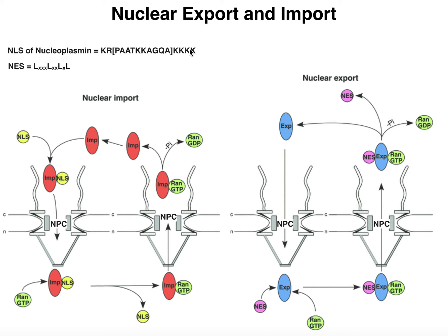Lysine is a basic amino acid that is positively charged at physiological pH. You can also find arginines in the NLS, but they're not as common as lysines. The way the nuclear localization sequence works is that because it's positively charged, it's able to bind to the protein called importin. Importin is named because it facilitates import into the nucleus.